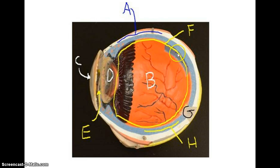Then back here, this opening is called the posterior cavity. And it contains vitreous humor. So again, the posterior cavity is this big opening behind the lens.